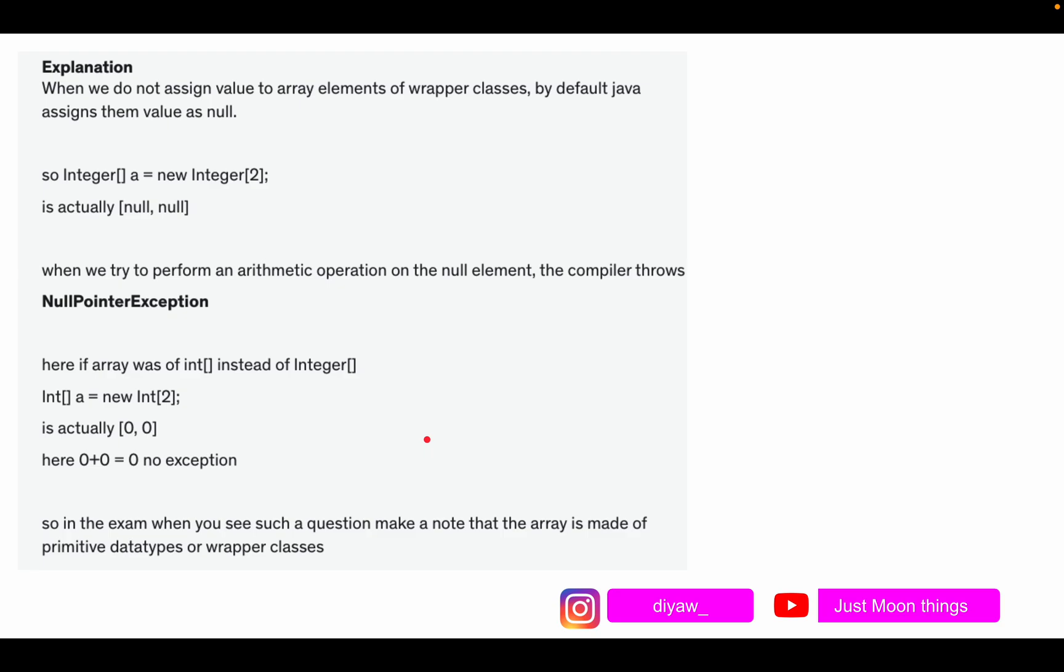So if the array would have been of type int instead of this Integer, in this case zero would be the value. Over here it is null. Take a screenshot of this slide or write it down somewhere: if it's a wrapper class then null will be the value, if it's a normal value type that would be zero comma zero.